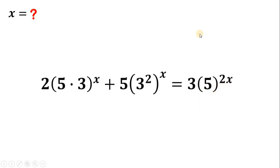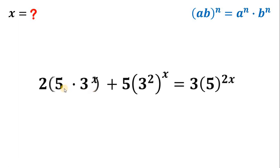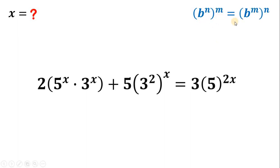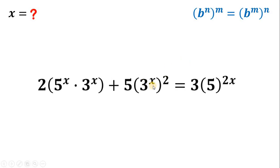Now let's use some laws of exponents. If we have ab raised to n, it is equivalent to a raised to n times b raised to n. Therefore, the expression 5 times 3 raised to x can be written as 5 raised to x times 3 raised to x. How about 3 squared raised to the power of x? If we have b raised to n raised to the power of m, it is equivalent to b raised to n times m. Therefore, 3 squared raised to x can be written as 3 raised to x, quantity squared.